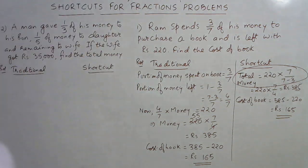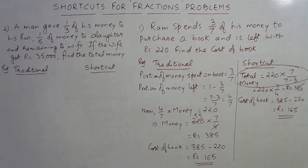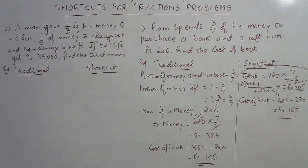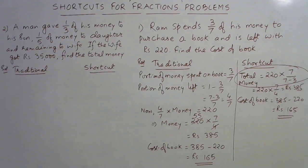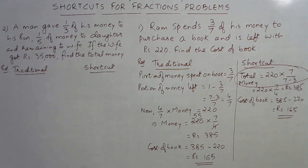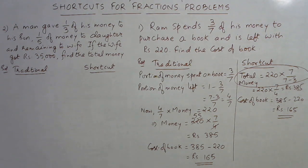Now the second question: a man gave one-third of his money to his son, one-fifth to his daughter, and the remaining amount to his wife. The wife's share is ₹35,000. We need to find the total money. Let's look at the traditional approach first.